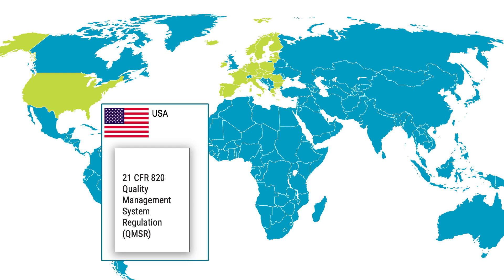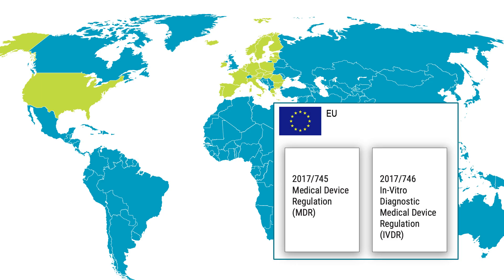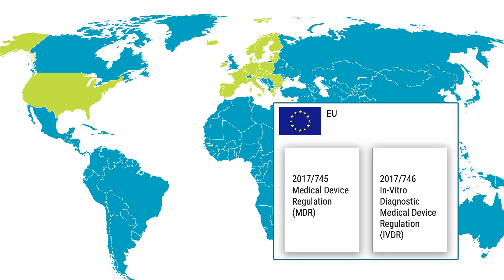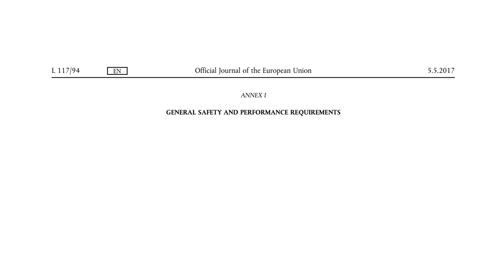Now let's turn to the EU. When placing a medical device on the EU market, one of two regulations will apply. The Medical Device Regulation, abbreviated MDR, covers regular medical devices, and the In Vitro Diagnostic Medical Device Regulation, called the IVDR, applies to In Vitro medical devices. The MDR and the IVDR require manufacturers to comply with safety, performance, and quality standards. Validating manufacturing processes is one way to fulfill safety and performance standards, as it ensures that these processes consistently meet the stringent requirements.